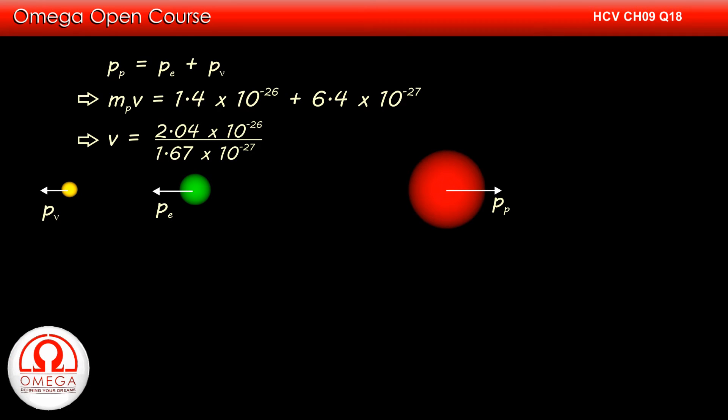Putting the value of m_p, we get v equals 2.04 x 10^-26 divided by 1.67 x 10^-27. Simplifying, we get the speed of proton is equal to 12.2 meters per second. This is the answer to the first part of the question.